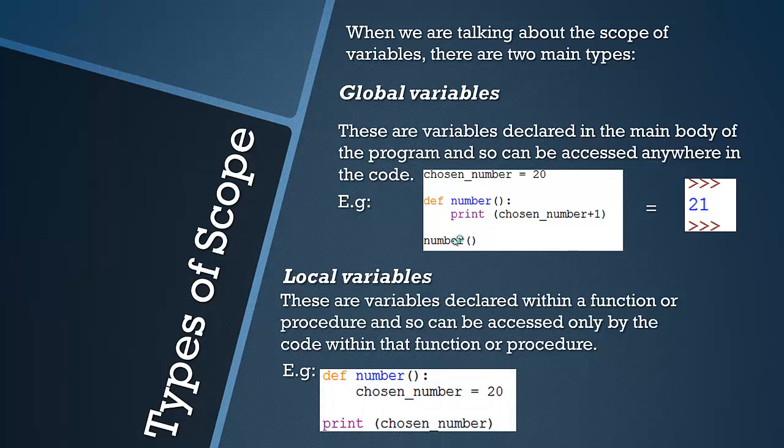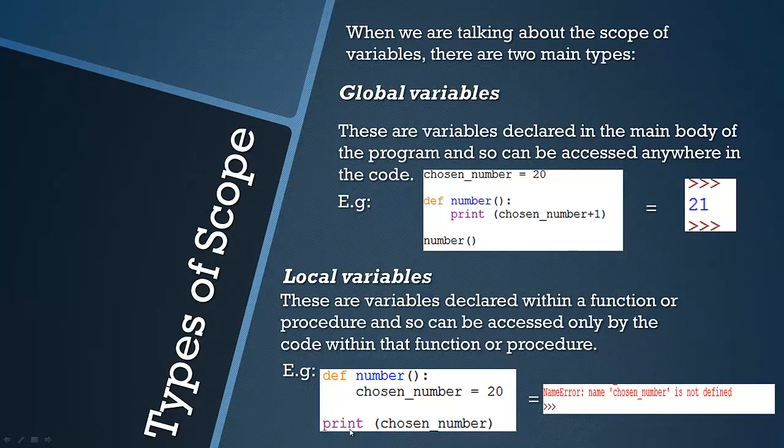So another example. So we're declaring another function named number here. And we're declaring the variable as 20 again. But when we try and print it without actually calling the function, we get an error because it can't be accessed by the main body because it's a local variable. So it's only accessible within that function. So we can't use it outside of that function and therefore we get an error.